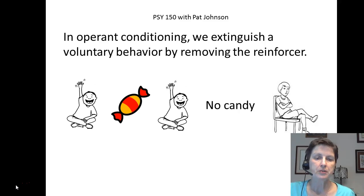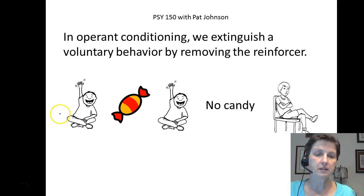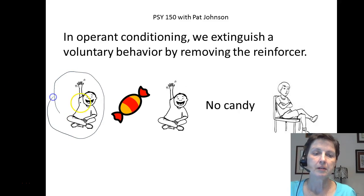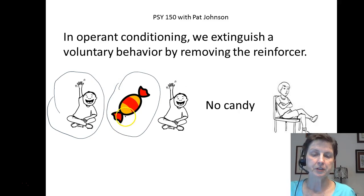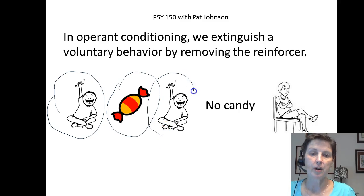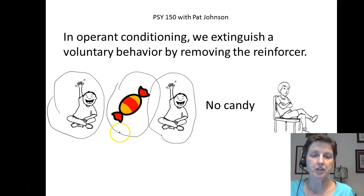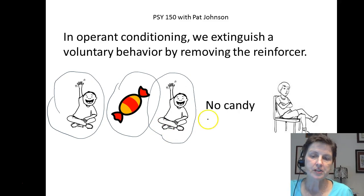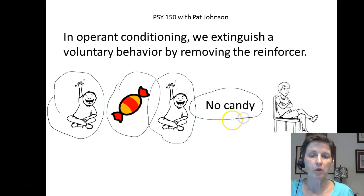Now let's suppose our student raises their hand and the teacher gives them a piece of candy. This primary reinforcer makes the child raise their hand more and more. And let's suppose the teacher gave the child candy each time the child raised his or her hand, and then all of a sudden the teacher ran out of candy and there was no more candy.